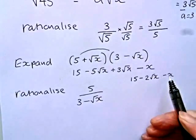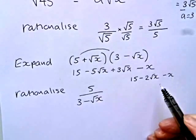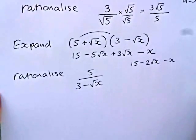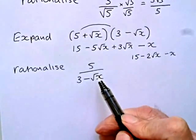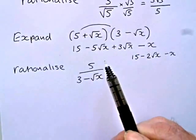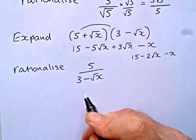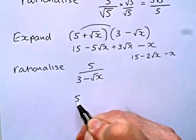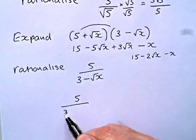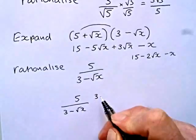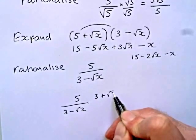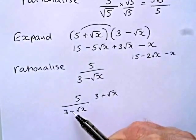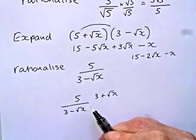So we end up then with 15 minus 2 root x minus x. It doesn't have to be written in that particular order, but those are the three terms that you should get. So onto rationalizing this particular surd. Same technique as before, except to rationalize 3 minus x, we have to multiply by what's called the conjugate 3 plus root x. So it's almost identical, except you swap the sign of the surd.